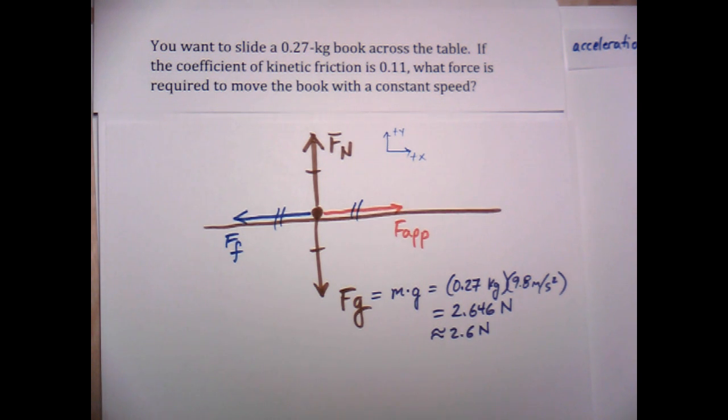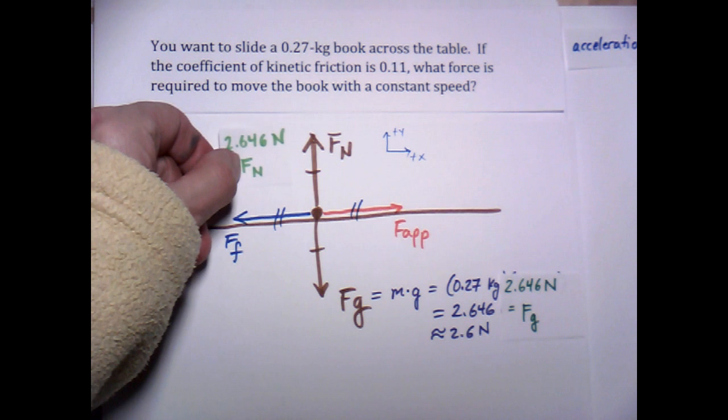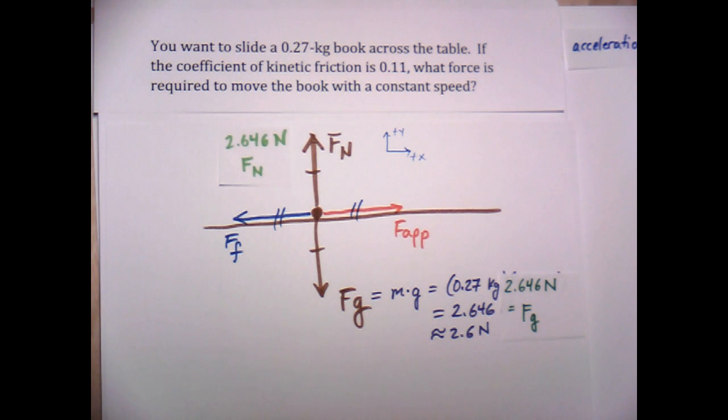Okay, so since the normal force is equal to 2.6 newtons, sorry, since the force due to gravity is equal to 2.6 newtons, then that means the normal force, which is equal in magnitude but opposite in direction, is equal to 2.646 newtons as well. So now, what we need next in our understanding is the equation that relates the frictional force to the normal force.